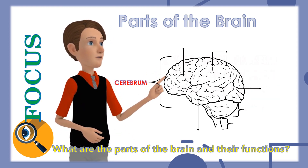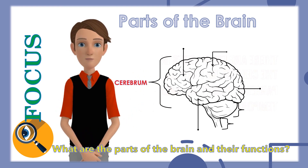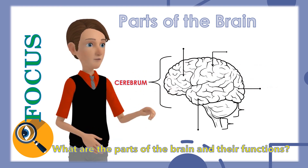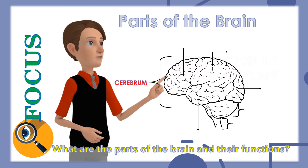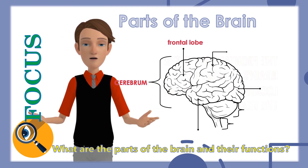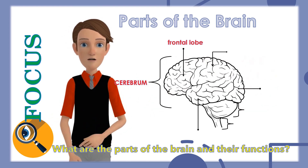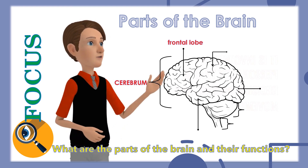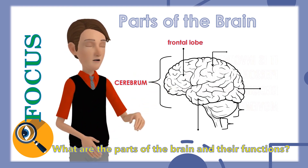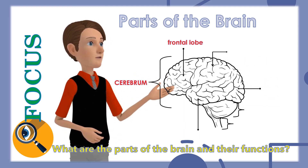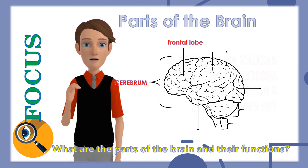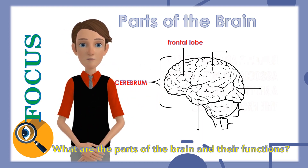There are four lobes in the cerebrum: frontal, parietal, occipital, and temporal. The frontal lobe is the brain's largest lobe, located in the front of the head. It is involved in personality traits, decision making, and movement. Broca's area, which is associated with speech ability, is located in the frontal lobe.